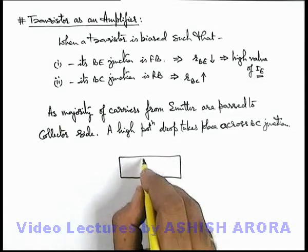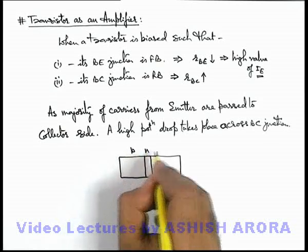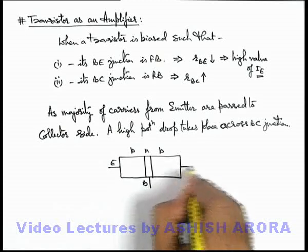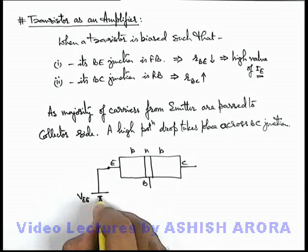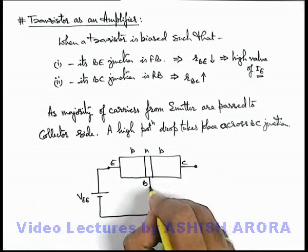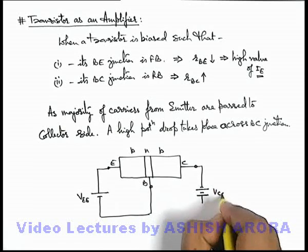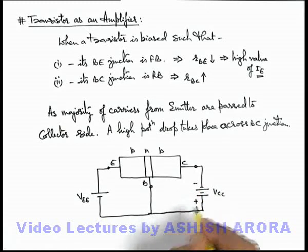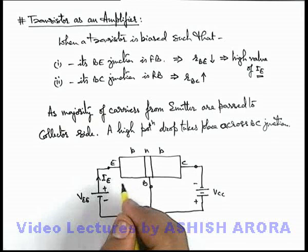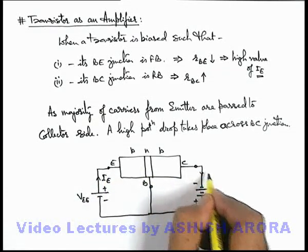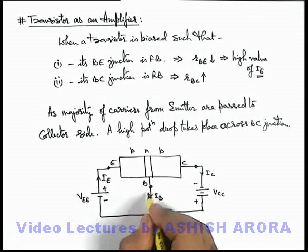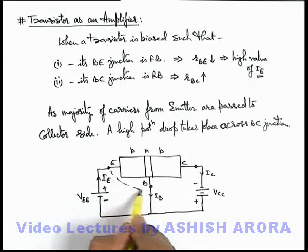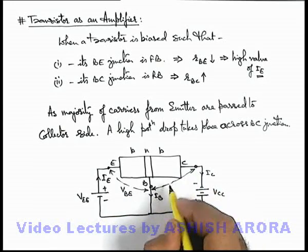Let's discuss the same with the help of a P-N-P transistor situation in which we connect the emitter side, base side, and collector side. If we connect the emitter to the positive side of a battery V-EE, and similarly connect the collector side with the negative terminal of another battery V-CC, just to keep the base-collector junction reverse biased. The potential difference across base and emitter side is represented by V-BE, and the potential difference across base and collector side is represented as V-BC.